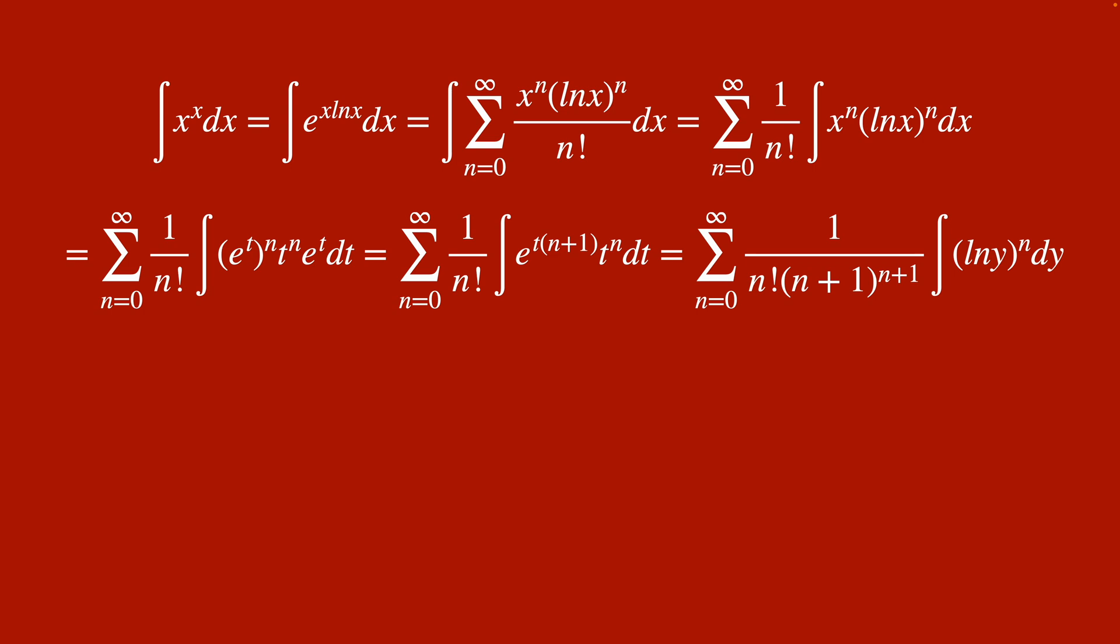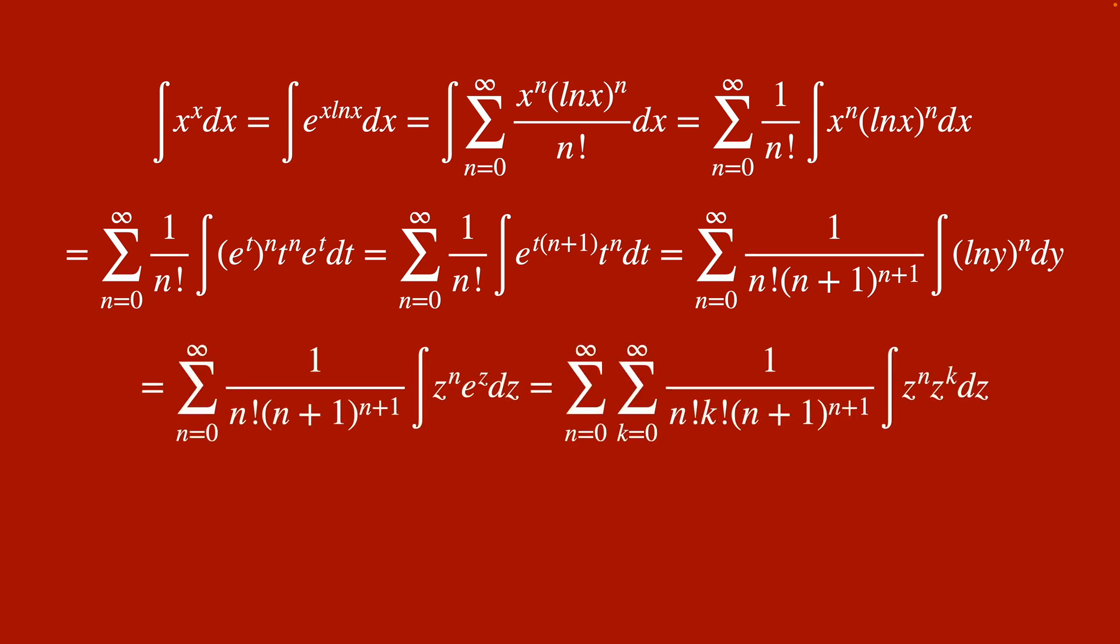And now our last substitution is just ln y as z, which gives dy as e to the z dz. And so we have this guy on the left here. We can use our Maclaurin series once more here now, right? Because we have e to the z.